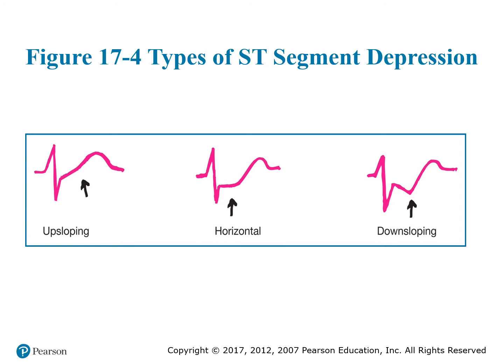Figure 17-4 shows the different types of ST depression you might see on an EKG reading of a patient doing a stress test. Up-sloping has the ST segment on an upward slope; horizontal appears near or slightly below baseline; and down-sloping may be signs of CAD.